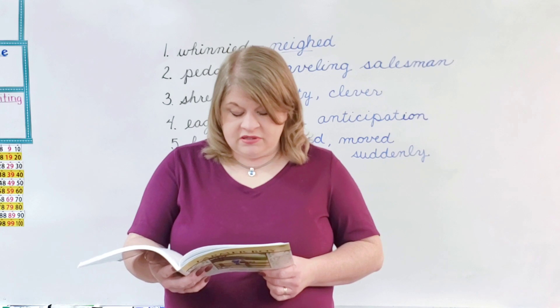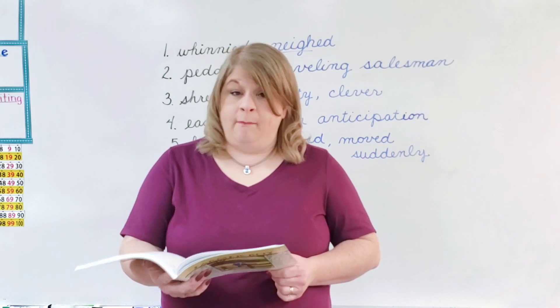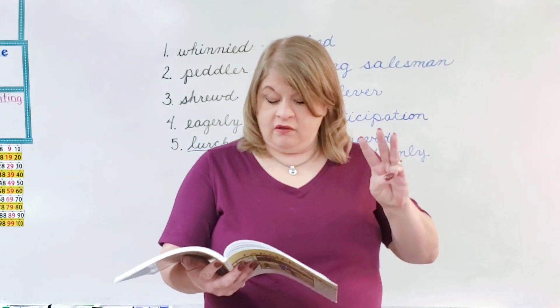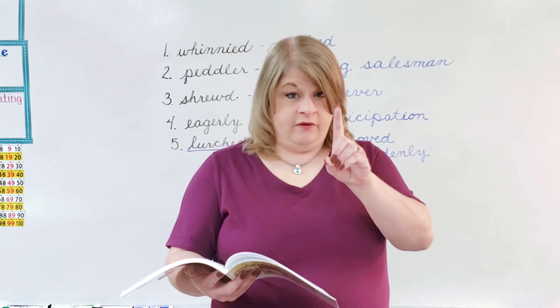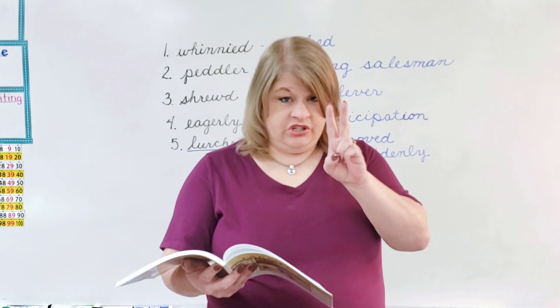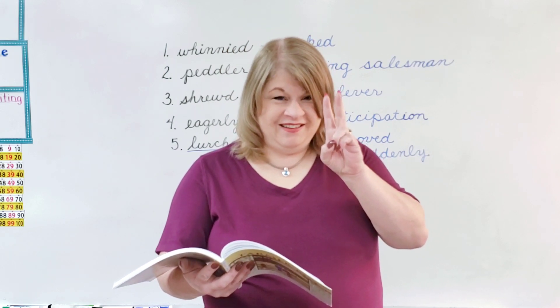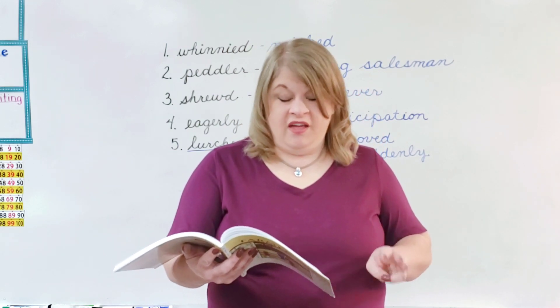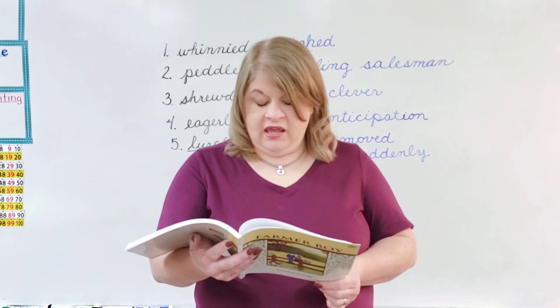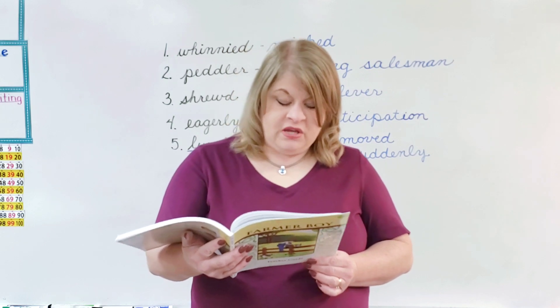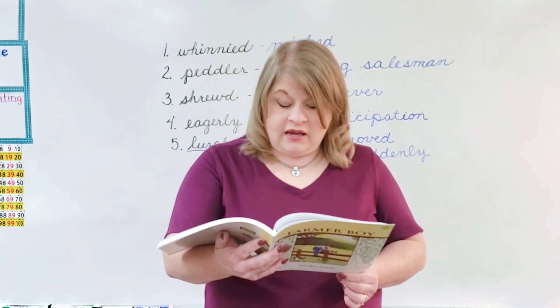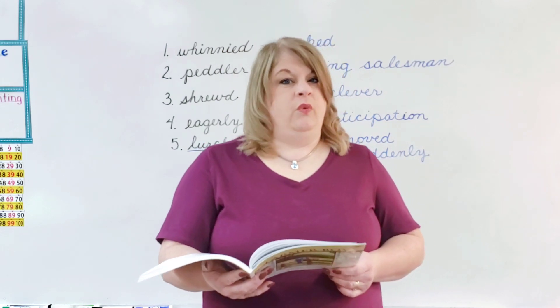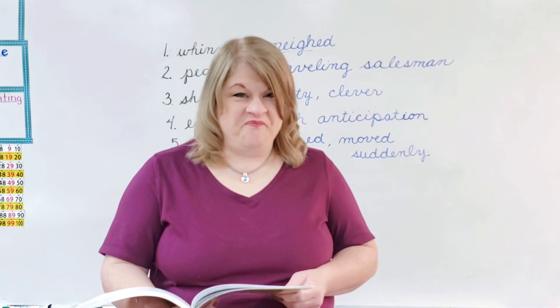Question two. Describe some of the wares the peddler brings. Can you tell me three things that were on his wagon right now? Let me read you the list that's in my book. He had pails, pans, basins, cups, dippers, skimmers, strainers, steamers, colanders, graders, horns, whistles, and toy animals. Whoa. That's a lot of stuff. Hopefully you remember three of them.